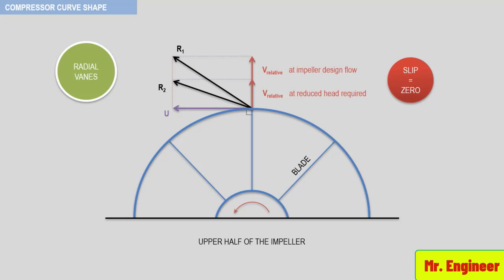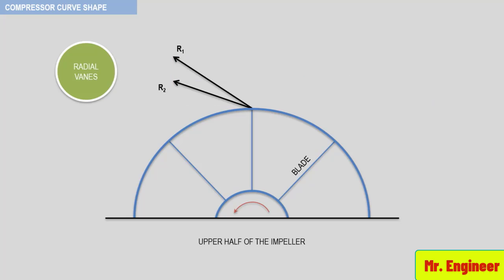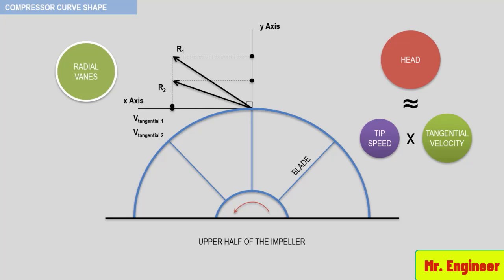Notice that since the relative velocity follows the radial blade path, the magnitude of the tangential velocities of R1 and R2 remains constant regardless of the value of relative velocity. Resolving R1 and R2 into X and Y components, it becomes clear that the two tangential velocities are identical. Since the head generated by the blade is the product of tip speed — unchanged — and tangential velocity — also unchanged — the design head produced in a radial impeller will remain essentially constant.